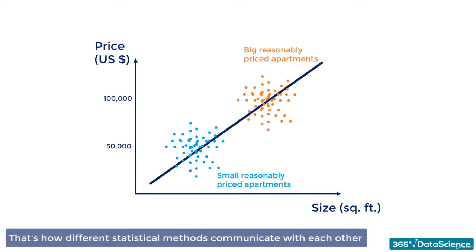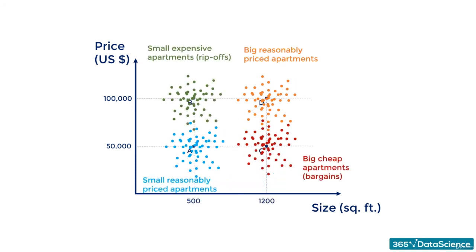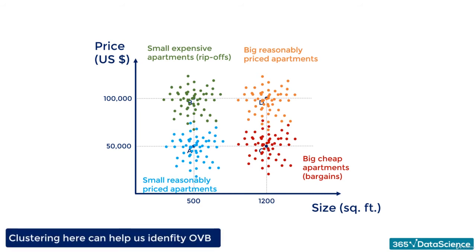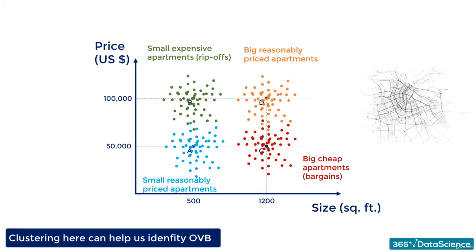And that's how different statistical methods communicate with each other. What about the initial four-cluster situation? Clustering, in this case, can help us identify omitted variable bias. You can think about clustering as a method for exploring the data and realizing that one or more significant variables have not been included in the analysis. So instead of predicting price based solely on size, we may need to include location to get a better prediction.